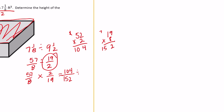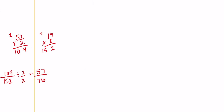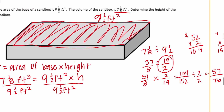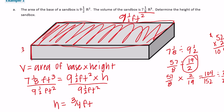They're both even so I'll start by dividing by 2. 152 divided by 2 is 76. Now 57 and 76 — they can both be divided by 19, and when we do that we get 3/4. So the height is equal to 3/4 of a foot.